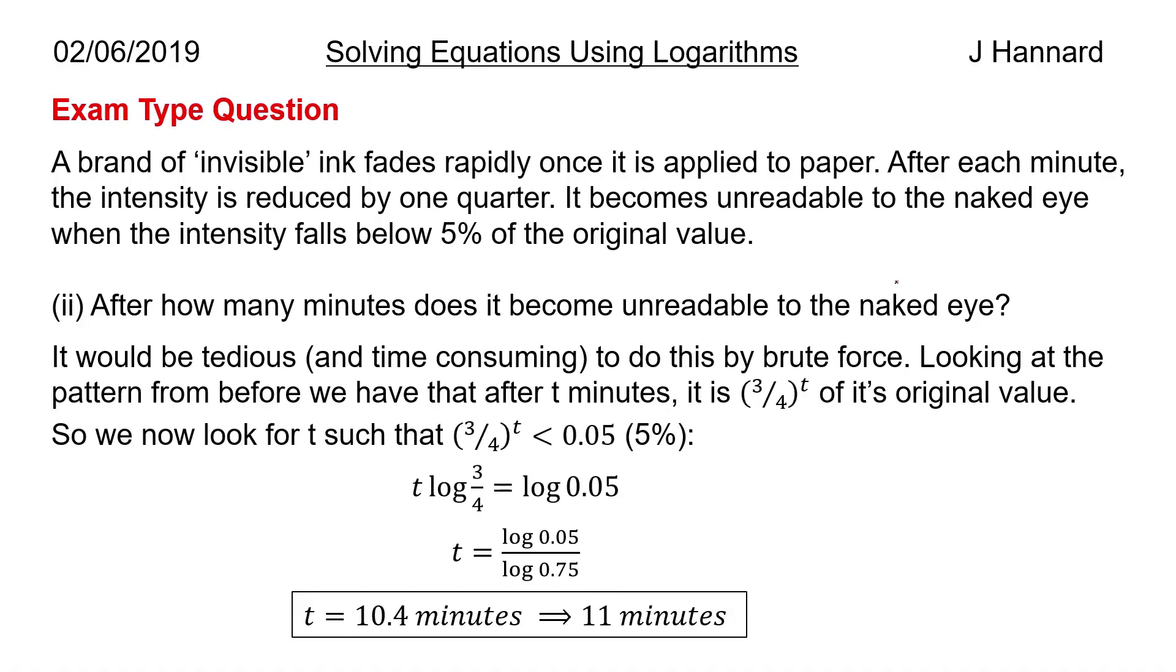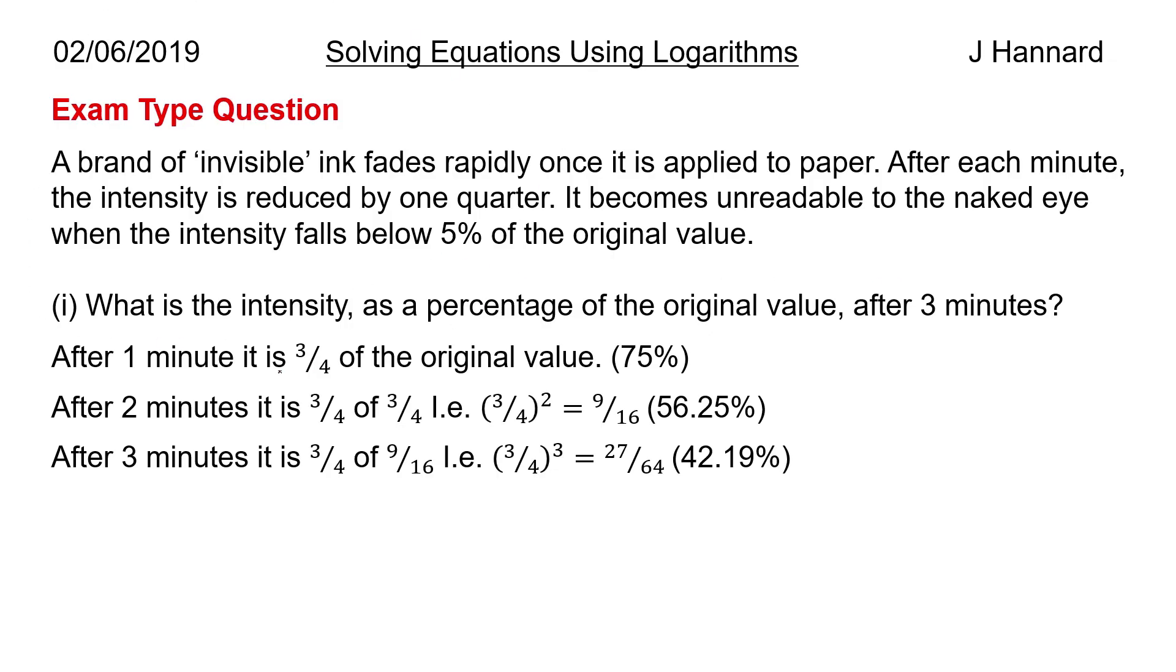Part two then. Oh I haven't animated it, never mind, so I'll put it all on the screen, we'll just read through it. So after how many minutes does it become unreadable to the naked eye? So it would be very tedious to keep going with what we were doing before, just going up in minutes until we got to five percent. So we're going to have to come up with a formula. So looking at the pattern from before, we have that after t minutes it is three quarters to the t of its original value, and we can see that right here. So we can see after one minute it's three quarters to the one, after two minutes it's three quarters to the two, after three minutes it's three quarters to the three, so after t minutes it's three quarters to the t.